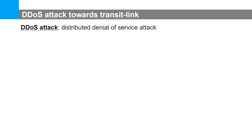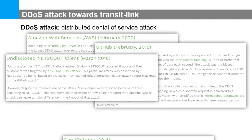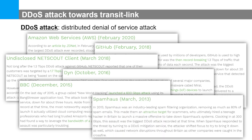DDoS attack is distributed denial of service attack. These attacks are a type of cyber attack designed to overload servers or disrupt network services by overwhelming them with access requests. We list some of the most famous recent DDoS attacks in the real world. DDoS attacks as a threat to network availability are becoming increasingly intense and sophisticated.